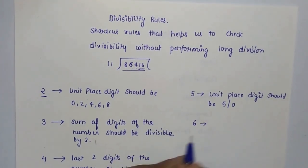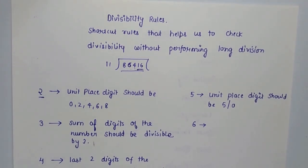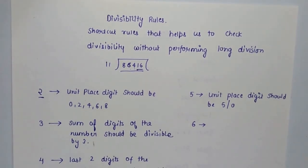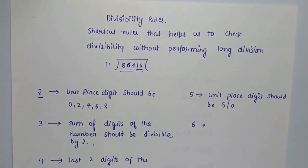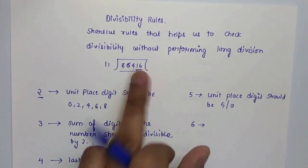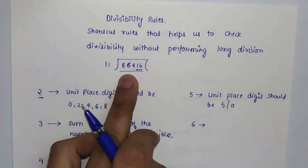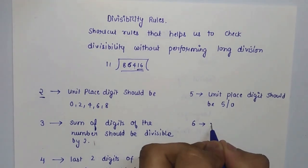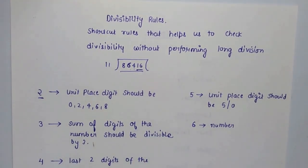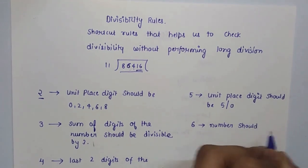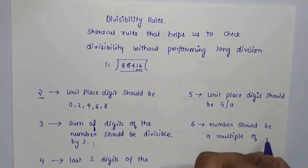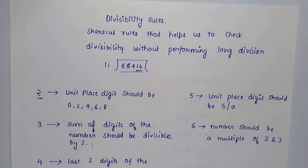The divisibility rule for 6 is that the number should be divisible by both 2 and 3. For example, 86,416 is divisible by 2, but since the sum of digits is 25 — which is not a multiple of 3 — it is not divisible by 3. Therefore, it is also not divisible by 6, since the rule requires divisibility by both 2 and 3.